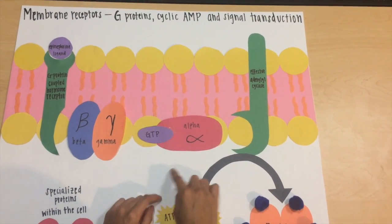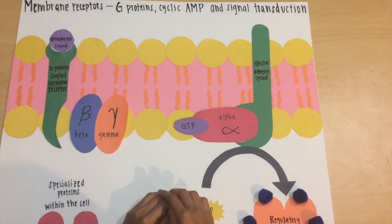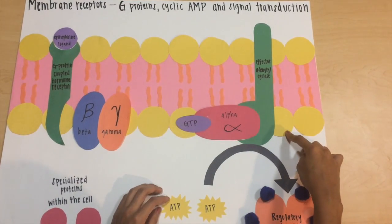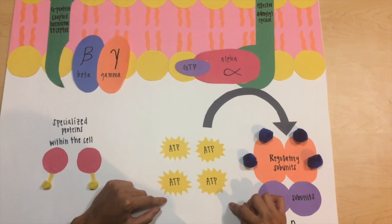The alpha subunit binds to the effector adenylyl cyclase. Once stimulated, adenylyl cyclase catalyzes the formation of cAMP from ATP.